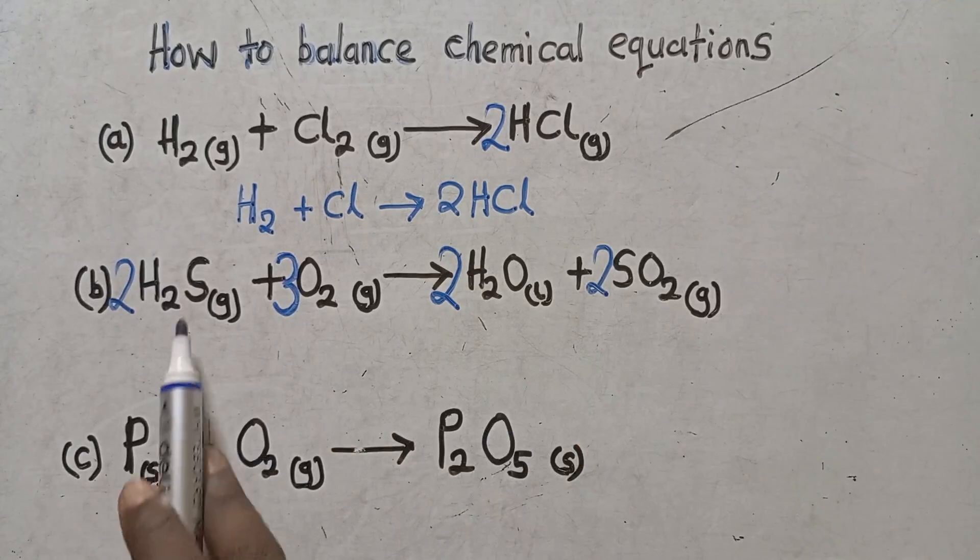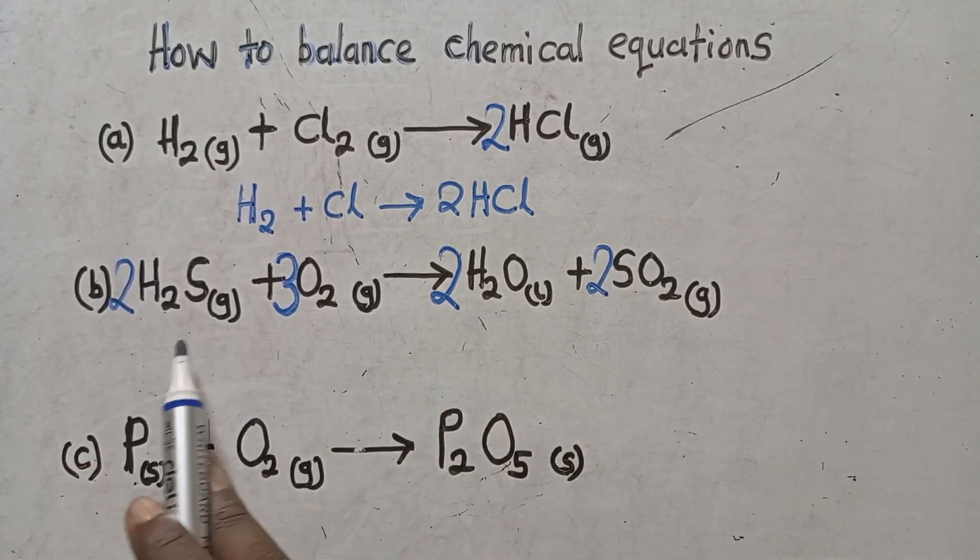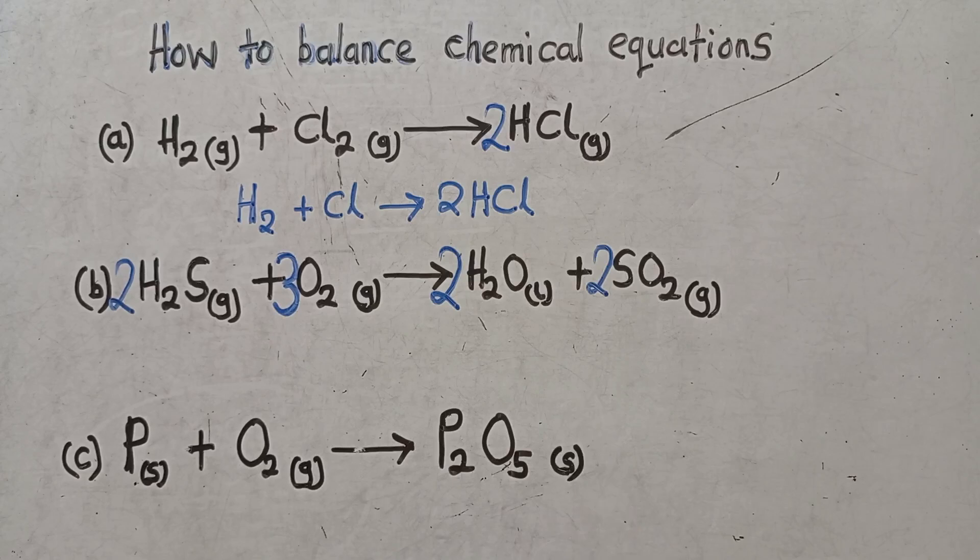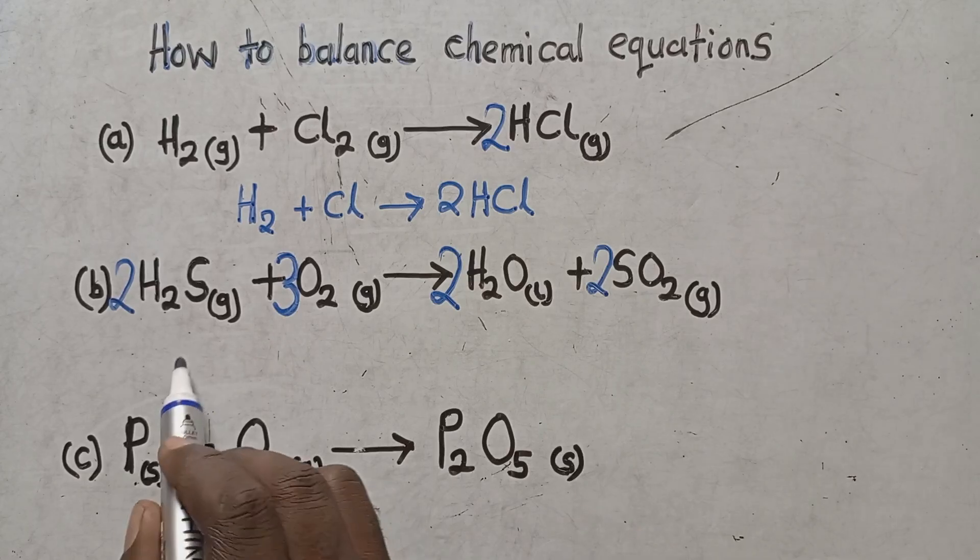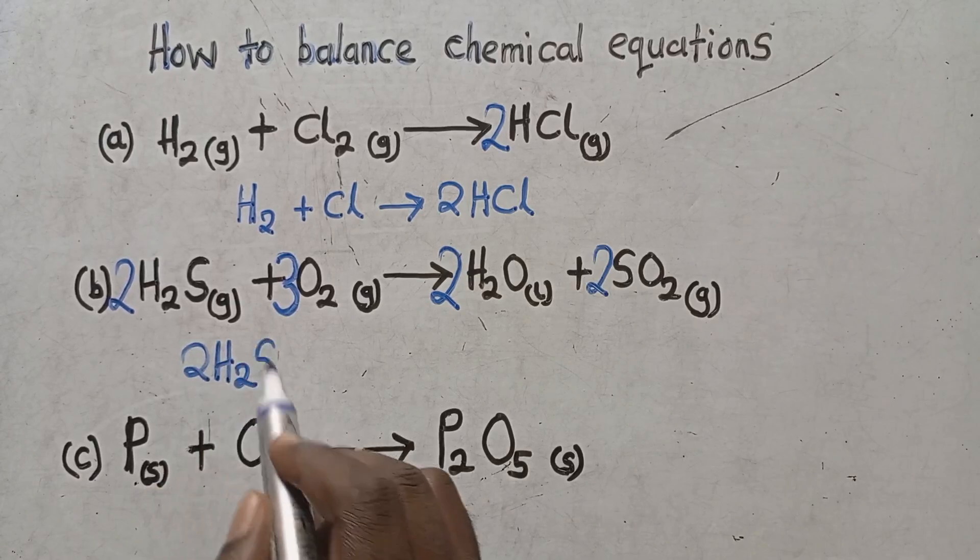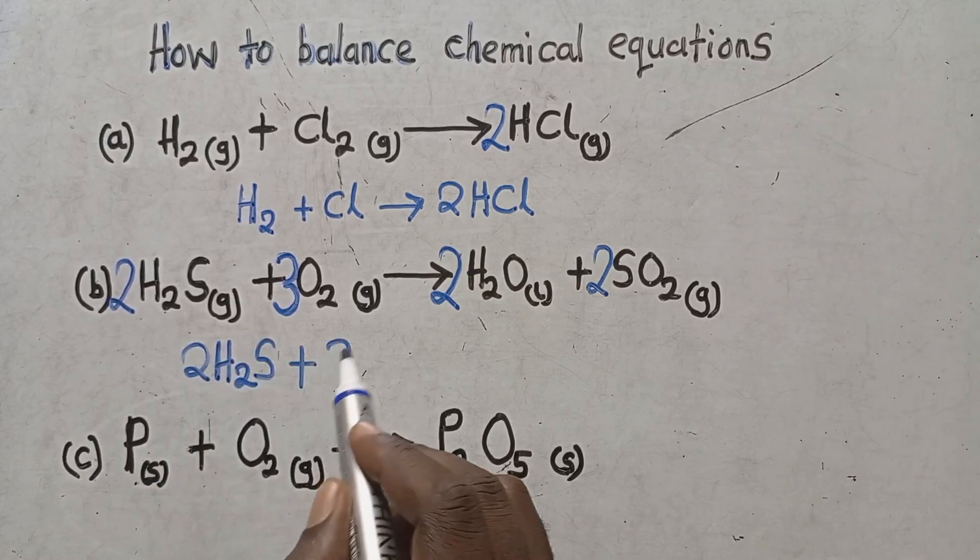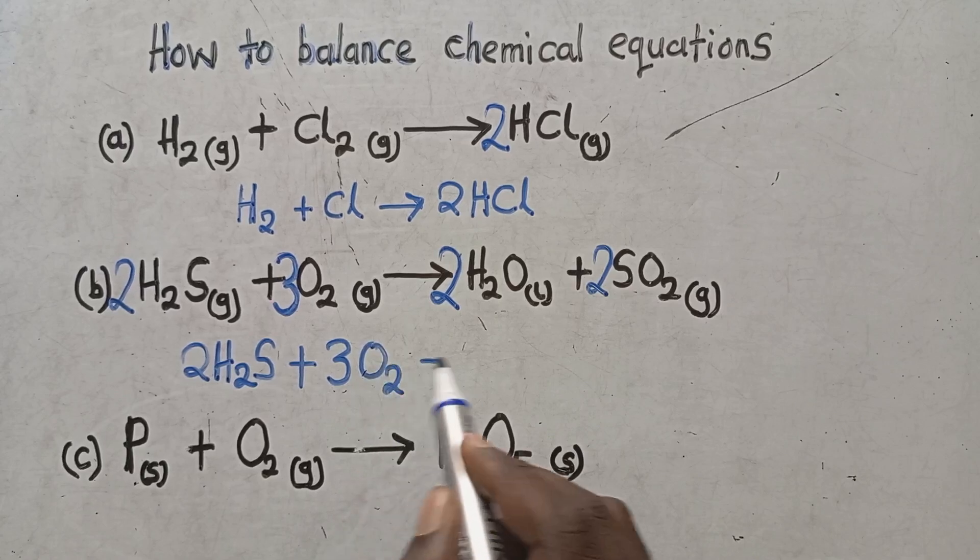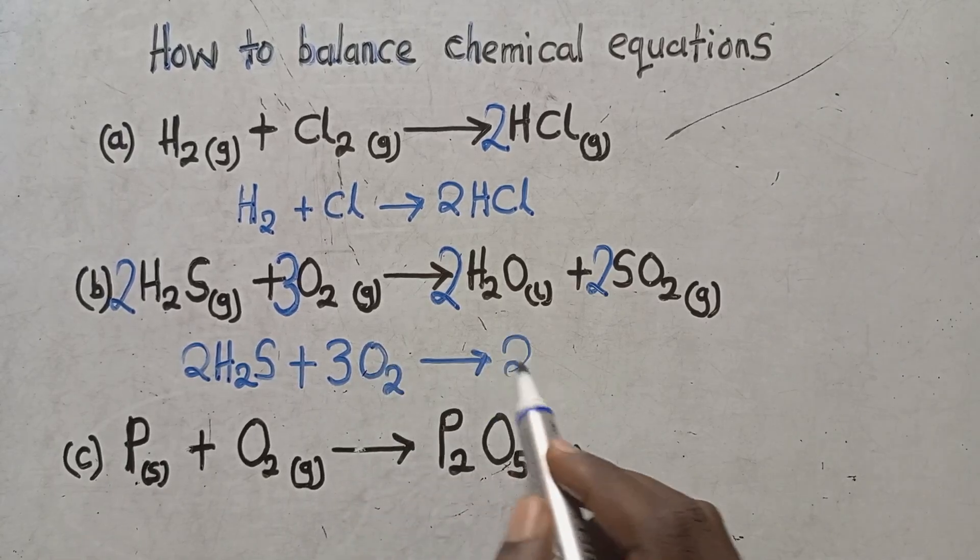What can I do to balance this? I just put a three here so that they become six. Six, two times three, six. Two plus four, six. Sulfur two, sulfur two. Hydrogen four, hydrogen four. It means that this is a balanced chemical equation.